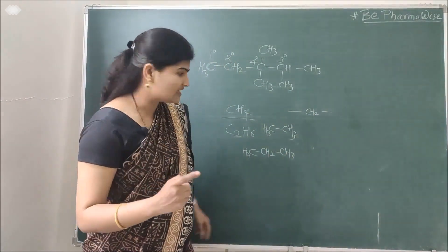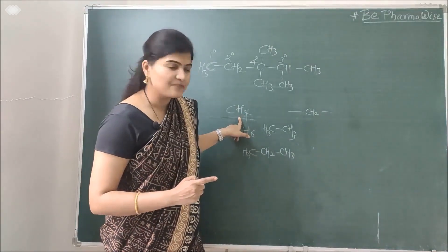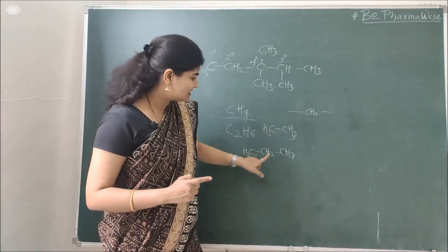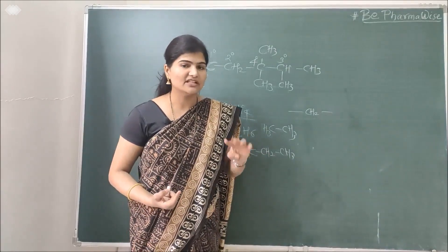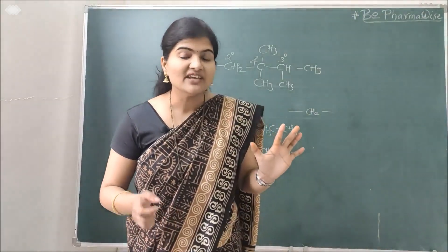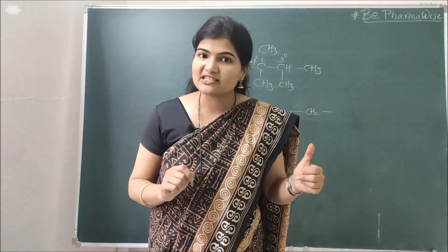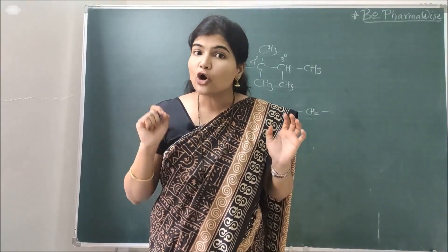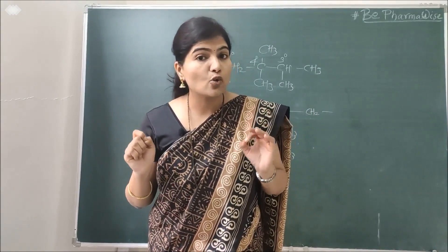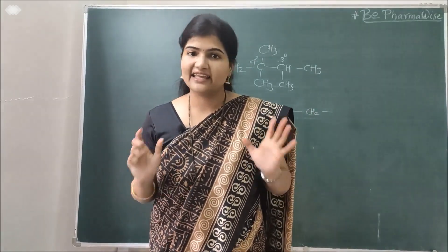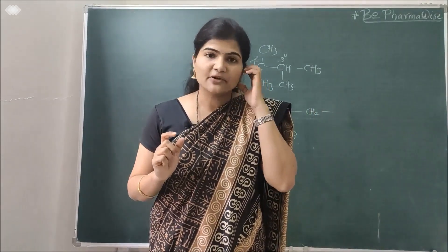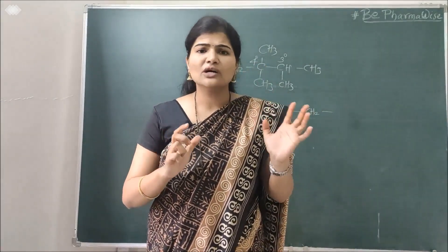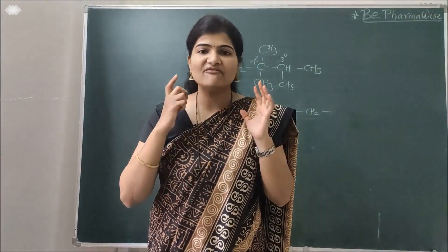The first member of the alkane family is methane, followed by ethane, then propane, then butane (4 carbons). For five carbons it is pentane, for six hexane, for seven heptane, for eight octane, for nine nonane, and for ten decane. You need to remember these names — mug them up, there is no other option.